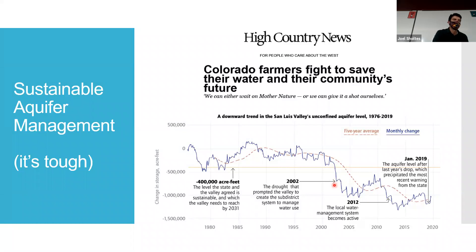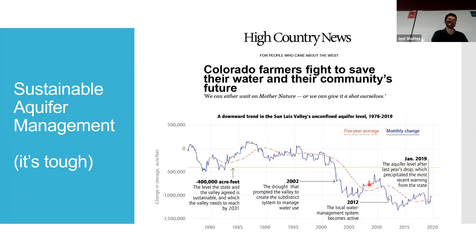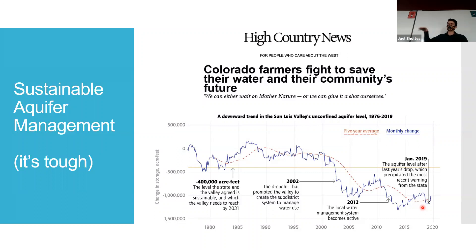In 2002 there was a really big drought, and the aquifer took a big hit. They started a voluntary program for people to either fallow their fields or cut back on irrigation, slowly building the aquifer back up. Then another drought hit, and it went down again. It's been hard — the aquifer keeps declining, and the state is threatening to step in and put restrictions on how much people can pump if it keeps going below certain levels.